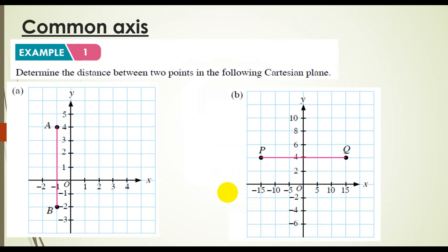Okay, contoh. Example 1: determine the distance between two points in the following Cartesian plane. For example A, awak tengok kat sini — ini adalah point A, ini adalah point B. Jarak dia macam mana nak tahu? Maknanya nilai A dengan nilai B, part X dia adalah sama — nilai untuk part X tu sama.